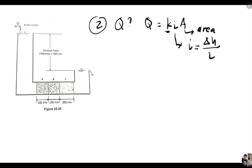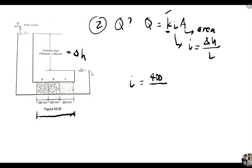Since we already have K_equivalent, let's solve for the hydraulic gradient I = delta H over L. Our delta H is 400 mm, and L is the total length of soil: 150 + 150 + 200 = 500 mm. So the hydraulic gradient I = 400/500 = 0.8.